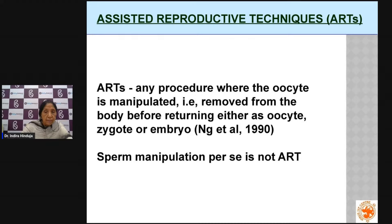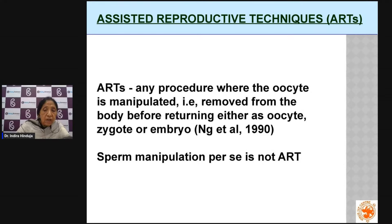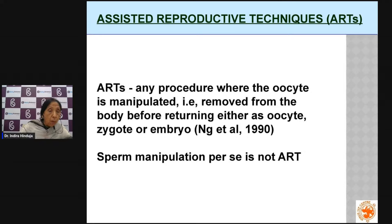Assisted reproduction is the technique in which the oocyte — that is, only the egg of the woman — is removed from the body and returned back either as an oocyte itself, or grown further to a zygote after meeting the sperm, or transferred as an embryo. However, only handling of the sperm outside the body is not considered assisted reproduction.